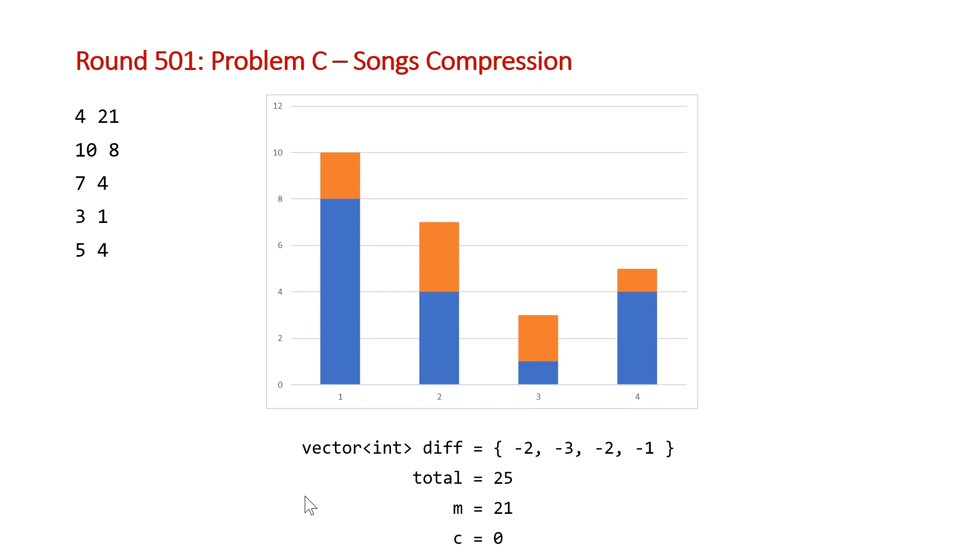Then we're going to calculate the total if we don't compress any of the songs, which is just all of the A values, so 10 plus 7 plus 3 plus 5, which is 25. And we can see that this is currently greater than 21.